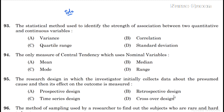The statistical method used to identify the strength of association between two quantitative and continuous variables — that means the relationship between two variables. Correlation is the correct answer here. Correlation means the relationship between two variables; it is used to find out the relationship between two variables.